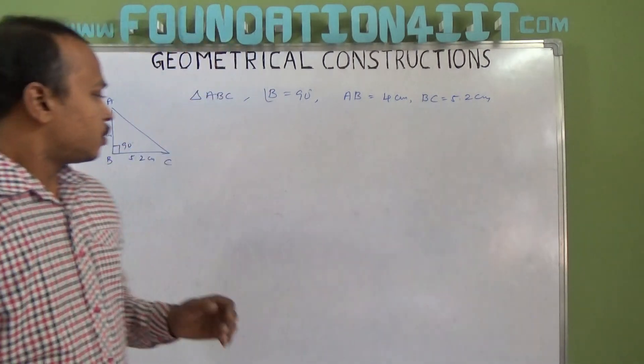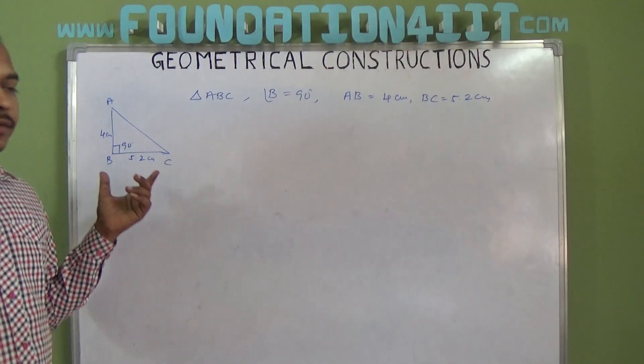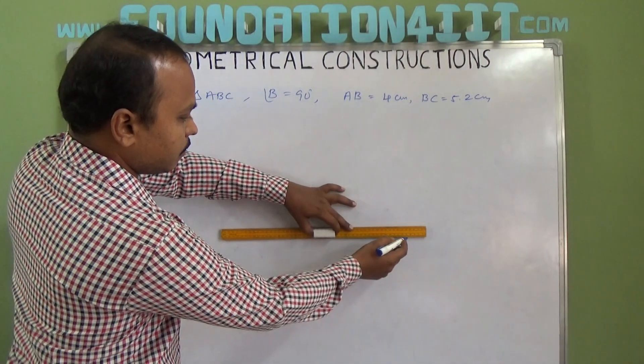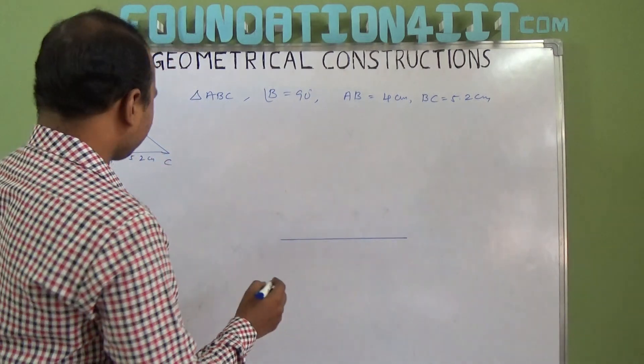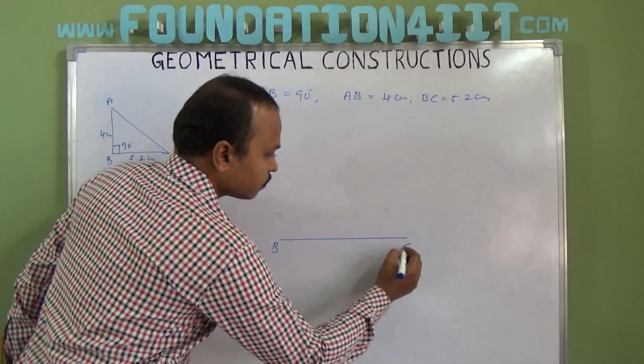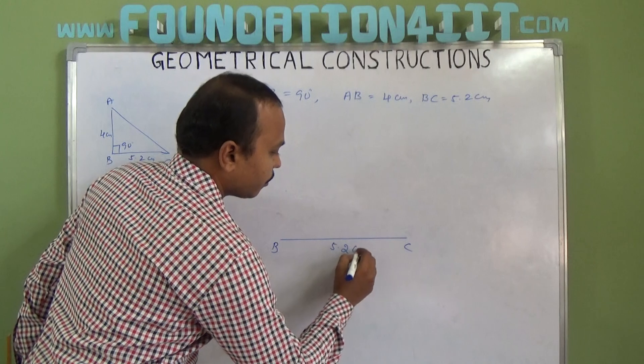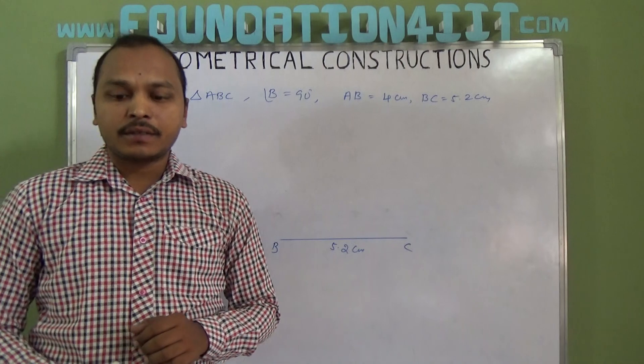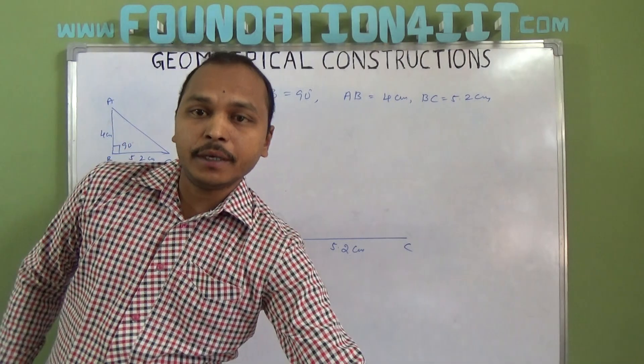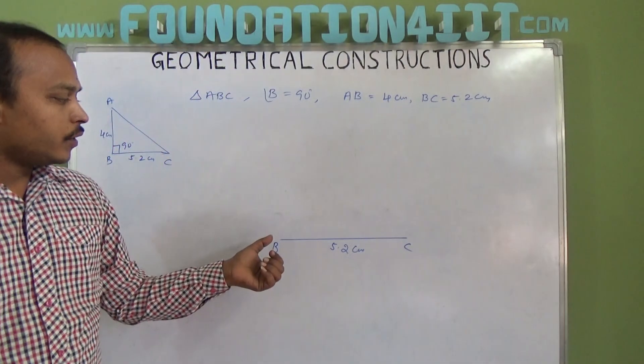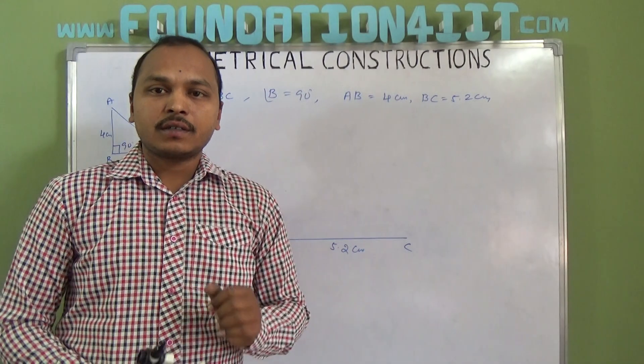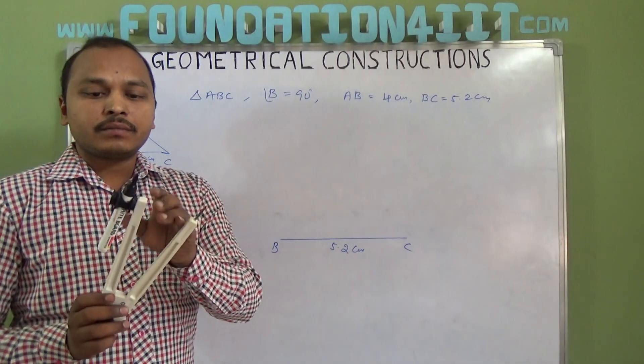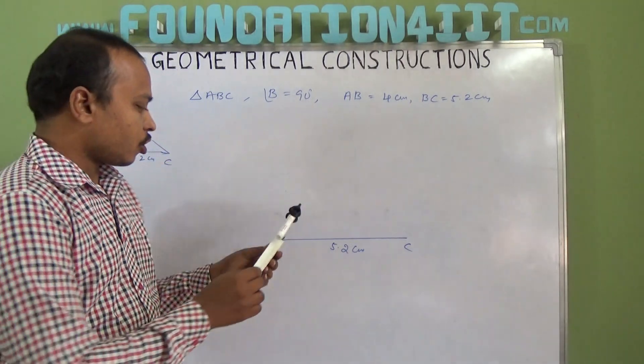First of all, we know the base BC is 5.2 centimeters, so draw the line segment BC at 5.2 centimeters. Now angle B is 90 degrees, so at point B we need to construct 90 degrees. For 90 degrees, take the compass with some radius and draw an arc.